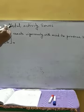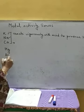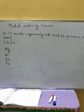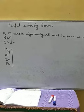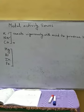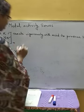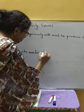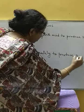Next in the activity series we have magnesium, aluminium, zinc, and iron. These four also react with acid. But as we know, these four have less reactivity than potassium, calcium, and sodium. So they will react moderately — these four also react moderately with acid to produce hydrogen gas.